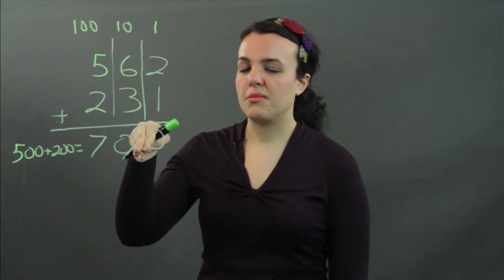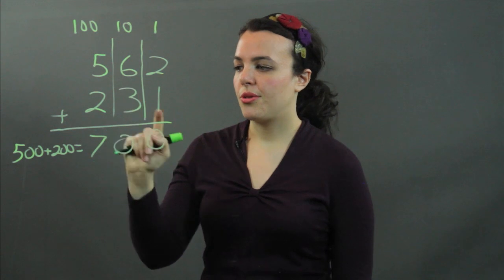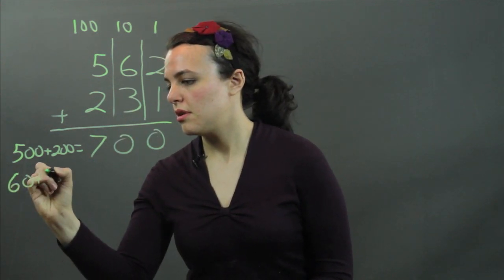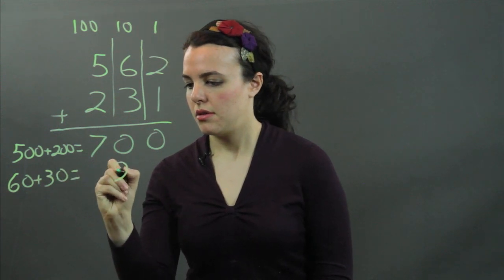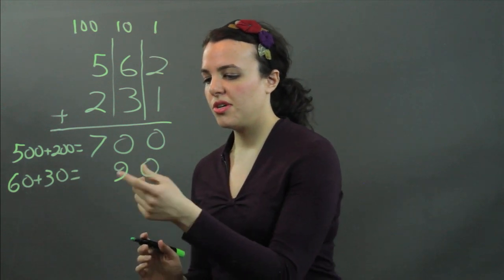Now, I can move to the middle column with the tens. I'm going to add 60 and 30. Remember, everything is aligned on the right. 60 and 30 adds to 90.